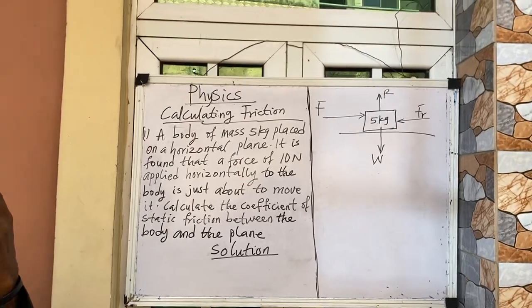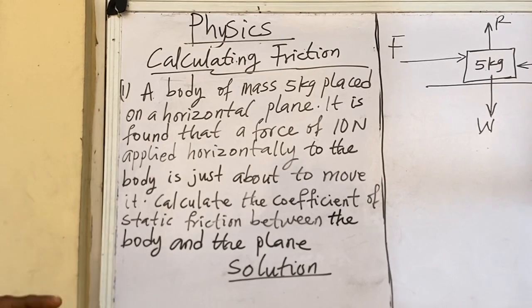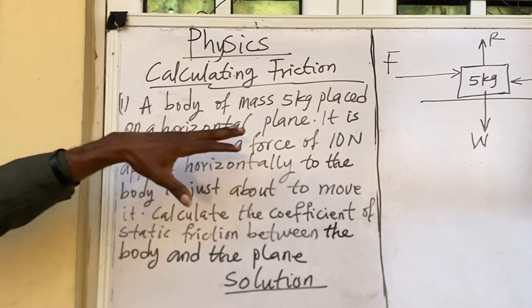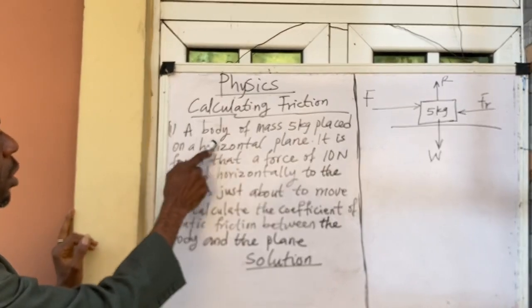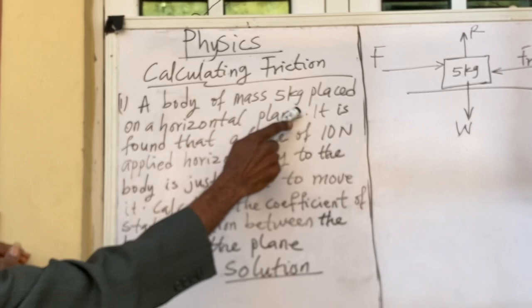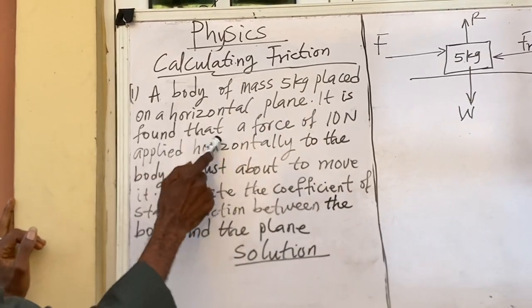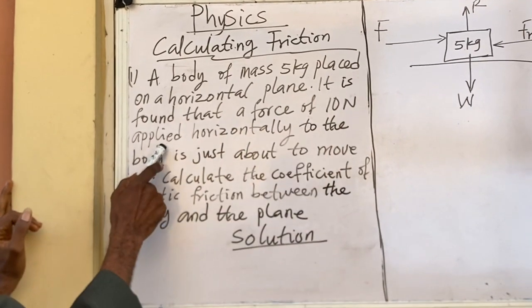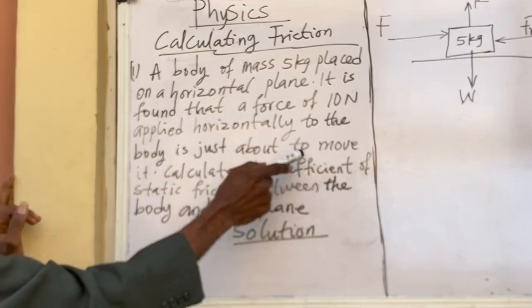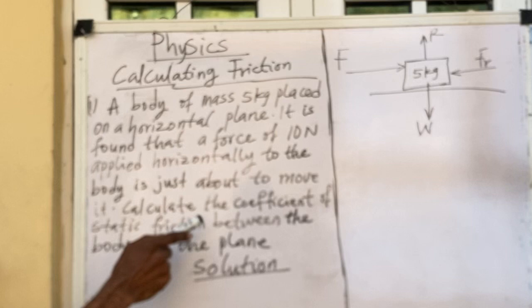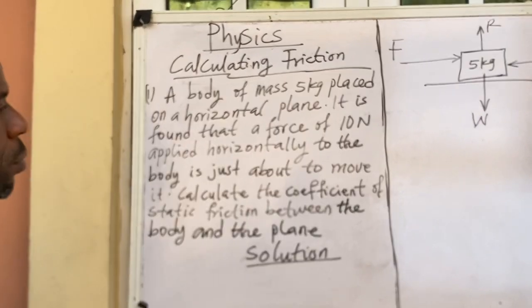Look at the question on the board. Remember we talked about friction and the laws of friction in our previous video. Today we shall look at the calculation relating to friction. So a body of mass 5 kg placed on a horizontal plane. It is found that a force of 10 Newton applied horizontally to the body is just about to move it. Calculate the coefficient of starting friction between the body and the plane.